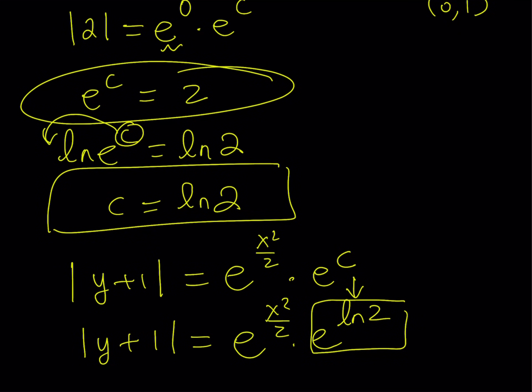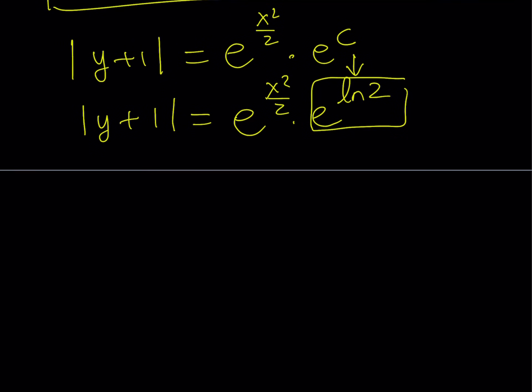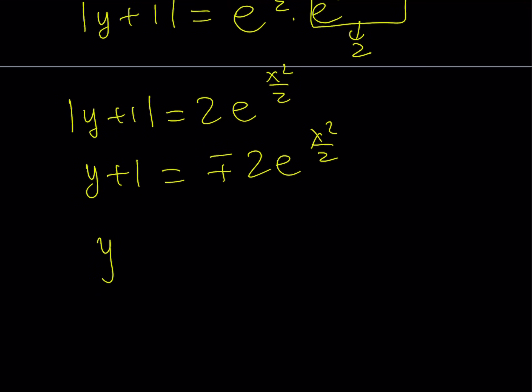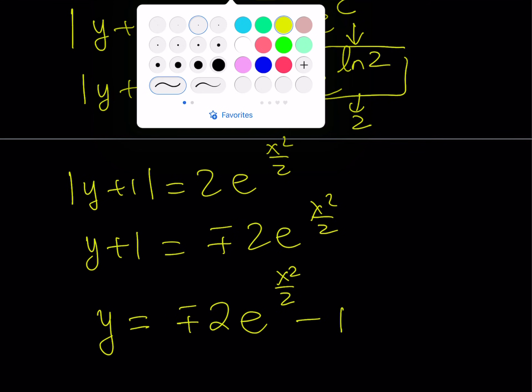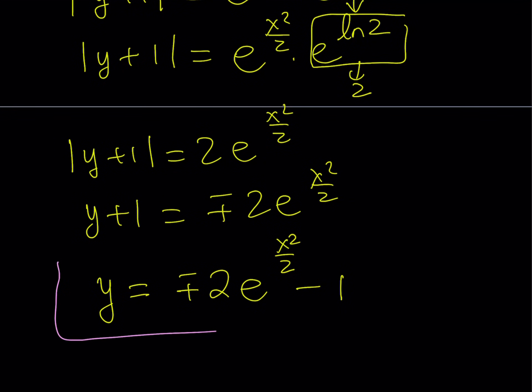So actually, in this case, you don't really have to solve for c. You can just keep this as is. So from here, we get the following. The absolute value of y plus 1 equals 2 times e to the power x squared over 2. Now, this means that you can write it as plus minus sign like this. And then if you subtract 1 from both sides, you're going to get an expression for y. So y by itself is going to equal plus minus 2 times e to the power x squared over 2 minus 1. So this basically gives us the solution of this differential equation with the initial condition.